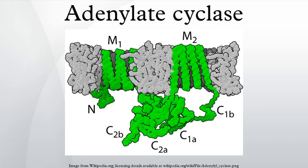Channelrhodopsin-2 is also used in a similar fashion. Regarding class III AC structure, most class III adenylyl cyclases are transmembrane proteins with 12 transmembrane segments. The protein is organized with 6 transmembrane segments, then the C1 cytoplasmic domain, then another 6 membrane segments, and then a second cytoplasmic domain called C2.